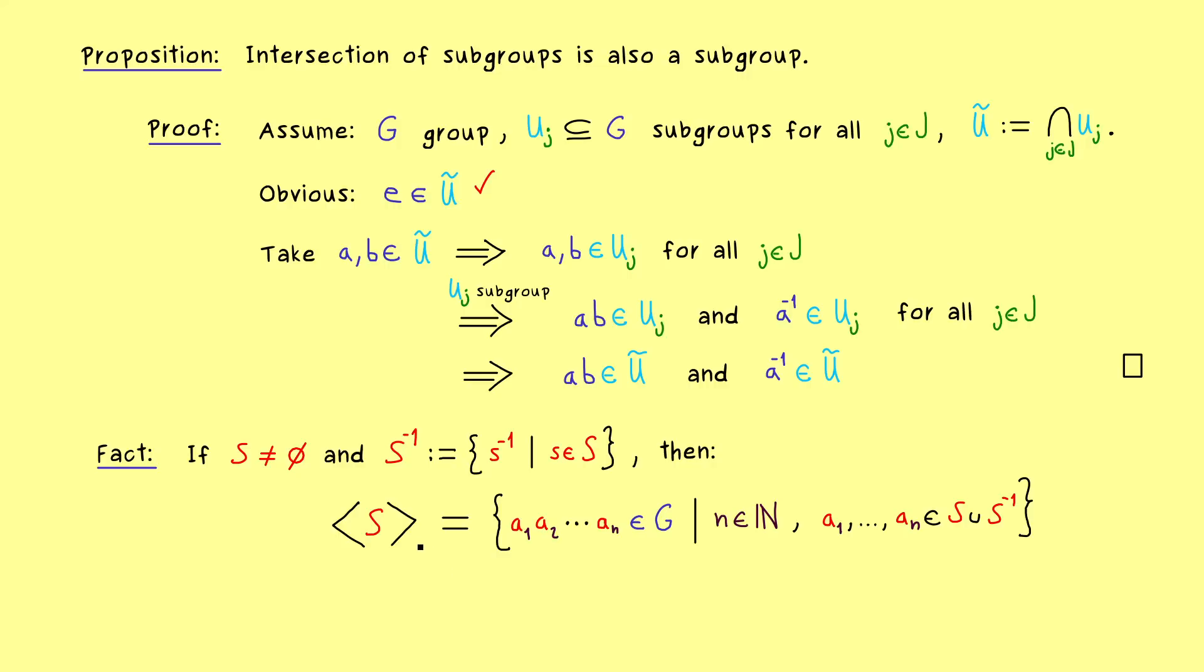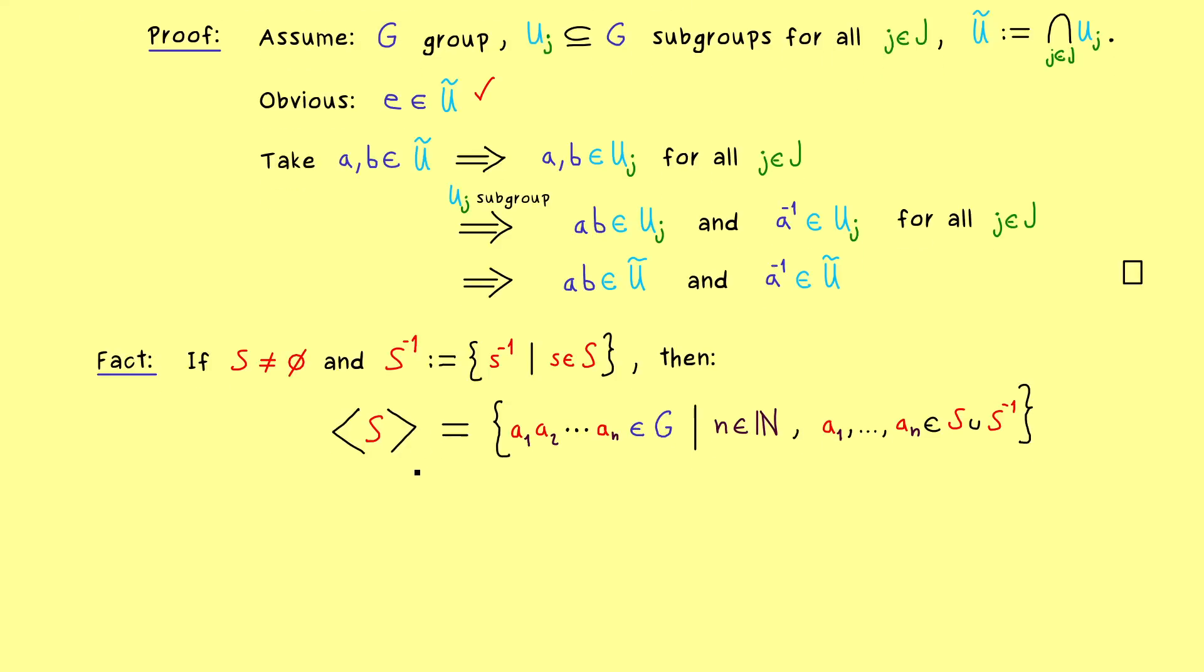Of course one has to concretely show the set inequality here, but for us it totally makes sense. The right hand side is what we actually mean by generating and what should come out is a subgroup. And by definition you see, it has to be the smallest possible subgroup that contains our set S. Therefore you might see that the actual proof for this equality is not so hard.